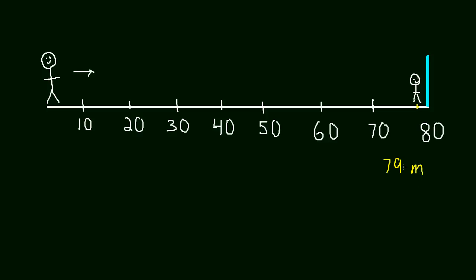Well let's say he wants to get closer to the wall for some reason. He's one meter away but he wants to keep walking. He gets closer to the wall and let's say we measure his distance again and it's 79.9 meters. Now he's only 0.1 meter away from the wall.